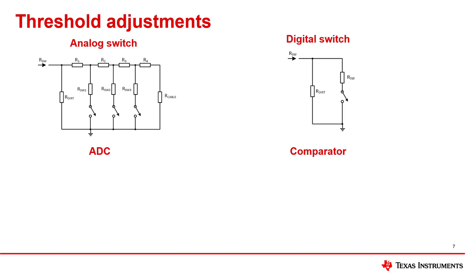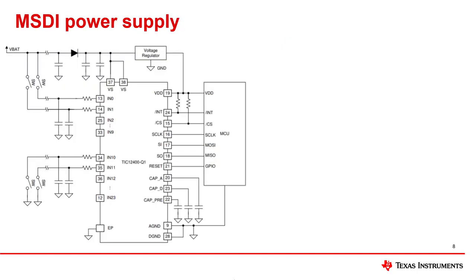In ADC mode, the threshold can be programmed to any of the 1023 codes. In comparator mode, there are four preset reference threshold voltages to choose from, and they are 2, 2.7, 3, and 4 volts. The adjustable threshold allows the system designer to use MSDI to mitigate some non-idealities in the switch detection systems.